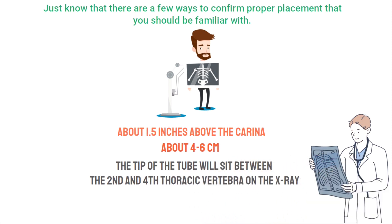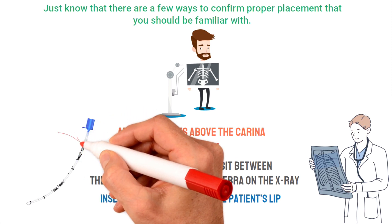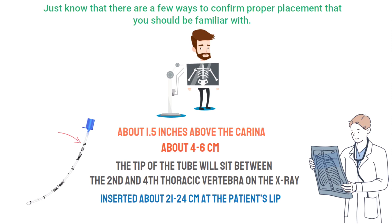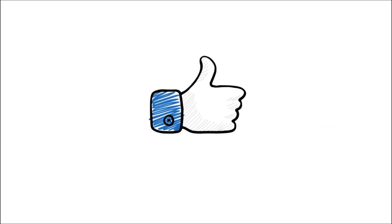Another quick general reference: the tube should be inserted about 21 to 24 centimeters at the patient's lip, which you can verify by looking at the markings on the tube. By looking at the answer choices, we can quickly see that only one option shows the tube is in the correct place, which means the correct answer is D — between the second and fourth thoracic vertebrae.